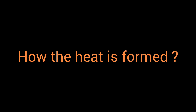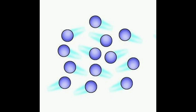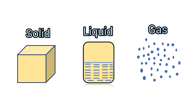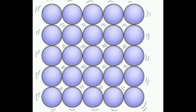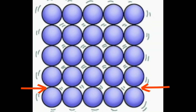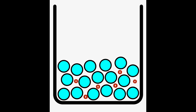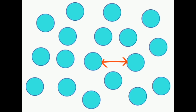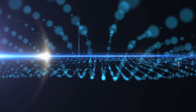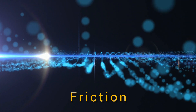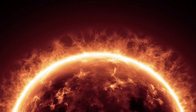To find that, first we have to understand how heat is formed. There is matter all around us, and that includes particles. Matter consists of solids, liquids, and gases. Solid particles are very closely packed, liquid particles have some gap, and gas particles have more gap between them. When these particles vibrate, this creates friction, and this friction creates heat in the matter.